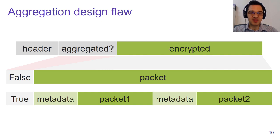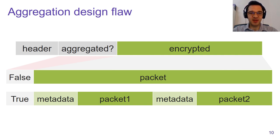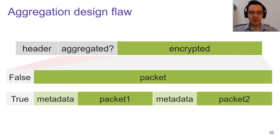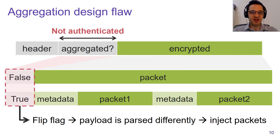As you can see here, when multiple packets are aggregated, the encrypted payload starts with the metadata about the first packet, followed by the actual content of the first packet, then the metadata about the second packet, and so on. The design flaw is that this flag is not authenticated. This means that as an adversary, we can modify this flag, which will make the receiver process the decrypted payload in an unintended manner, allowing us to inject packets towards a victim.